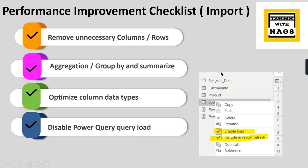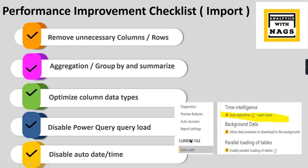The fourth checklist item is to disable the Power Query query load for unused tables. A lot of people perform some transformations requiring certain tables to be imported for lookup or other transformations, but those tables are not required in the modeling layer. Tables not used in your reports or modeling should be disabled — just right-click the table and uncheck those two boxes. That table will then not be loaded in the modeling layer and will only be used during the Power Query layer.